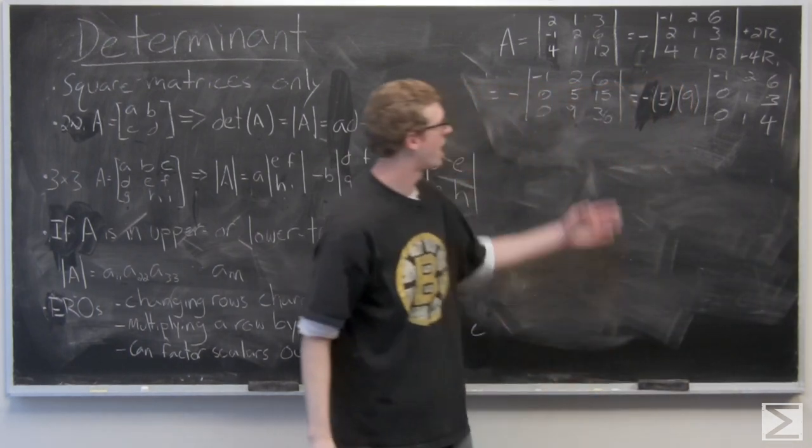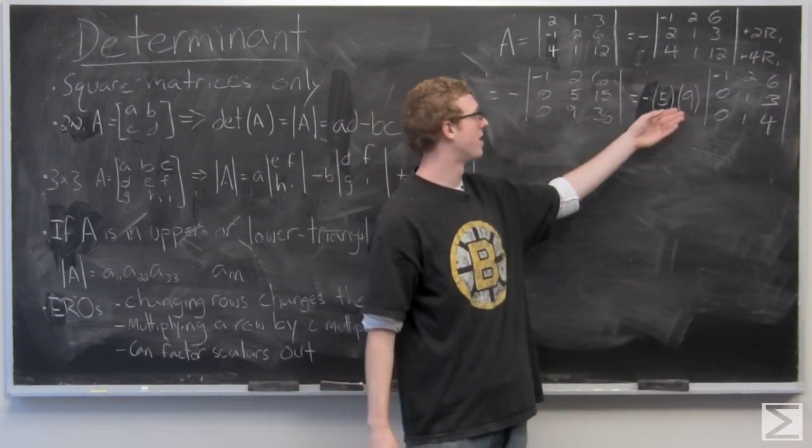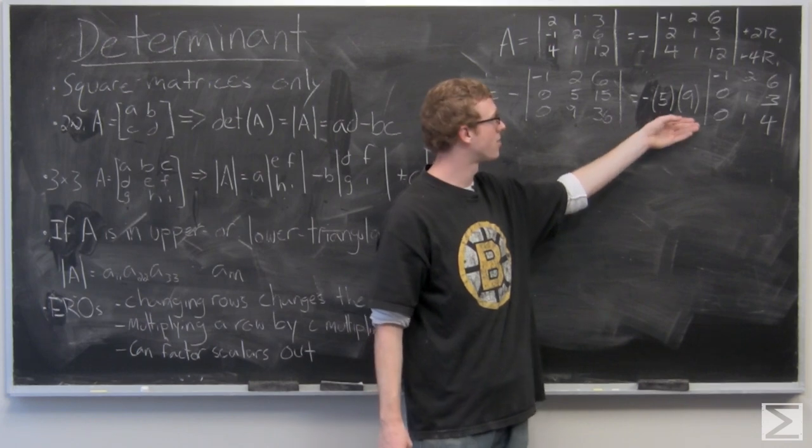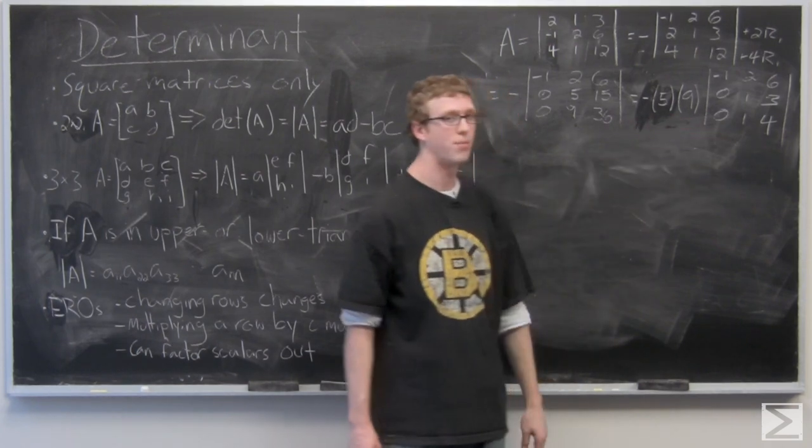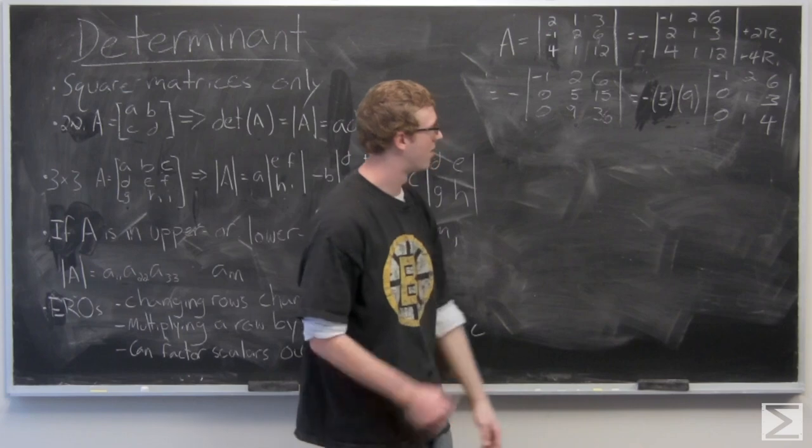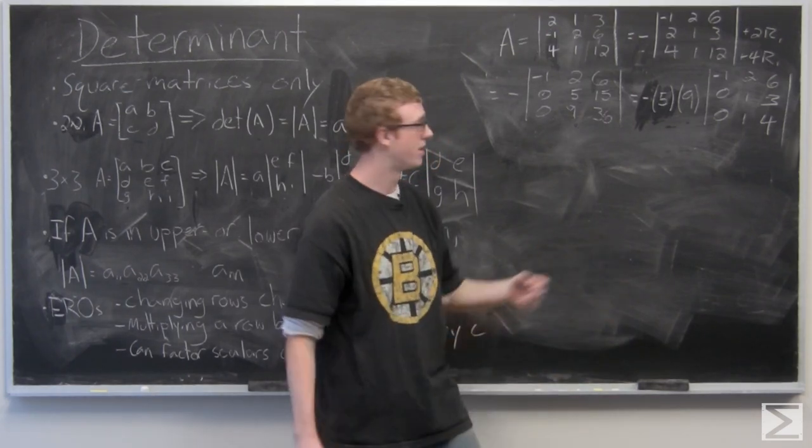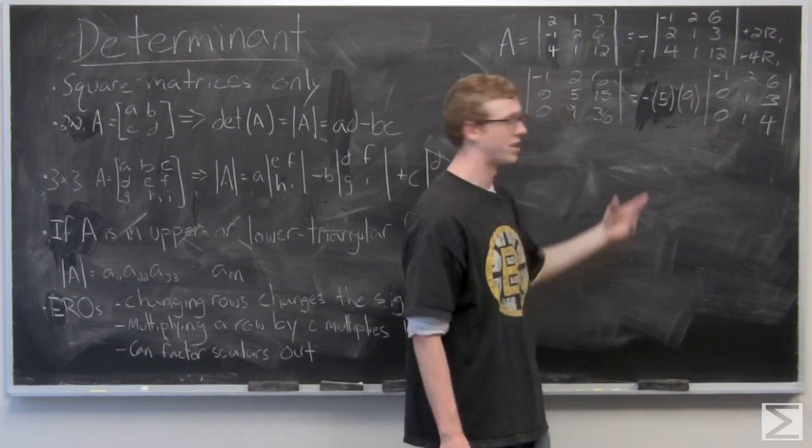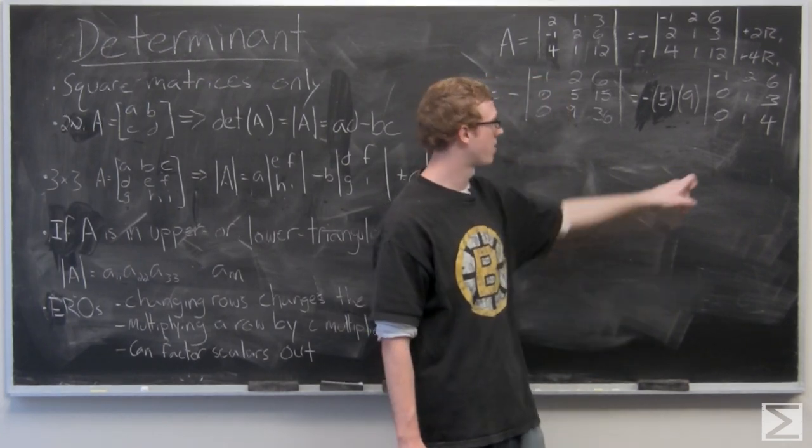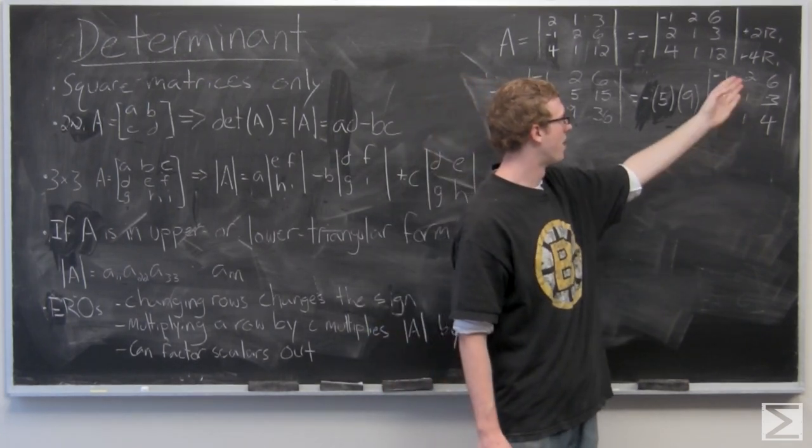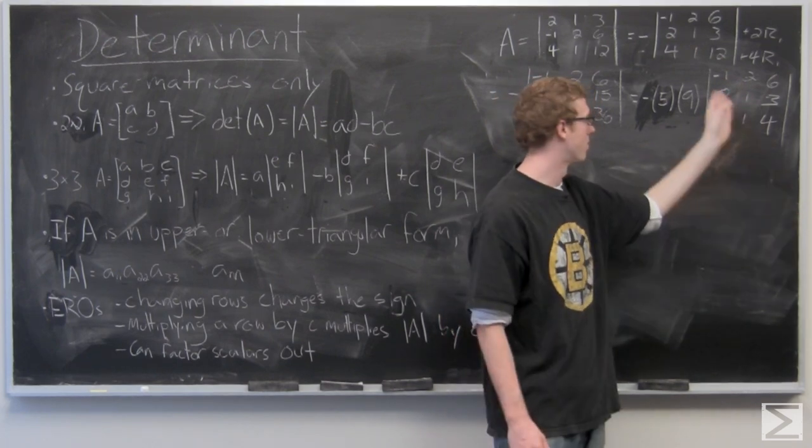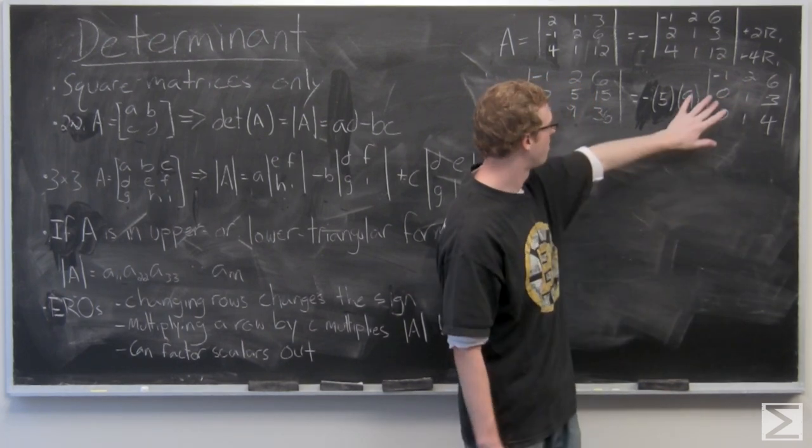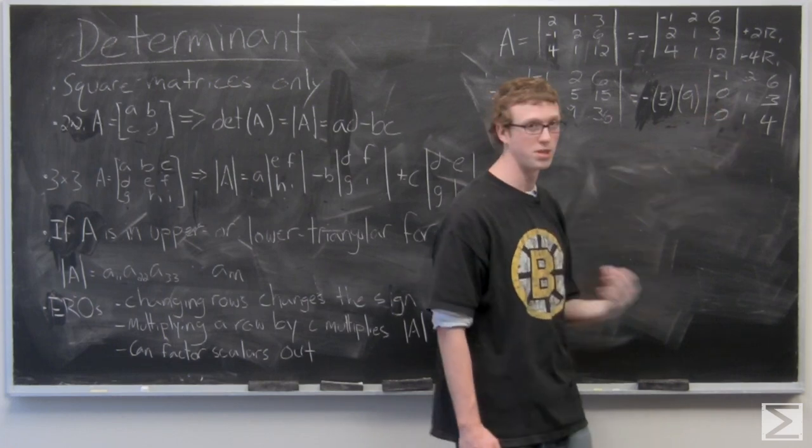So now we have it as negative 5 times 9 times the determinant of that matrix on the right. Basically all we need to do now is just subtract row 2 from row 3 so we can get rid of this 1, and that way the main diagonal will be filled with numbers but it will be in upper triangular form.